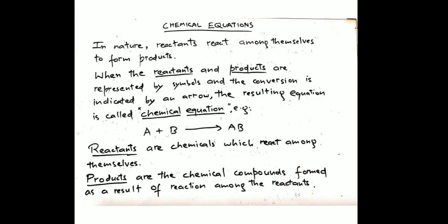What are chemical equations? There are chemical reactions in which we get reactants and make products — we call these chemical reactions. Reactants are chemicals that react; bonding forms, original bonds break, and new bonds are made. Due to the new bonds, products are made. When reactants and products are shown using symbols, conversion is indicated by an arrow, and equations are made — these are chemical equations.